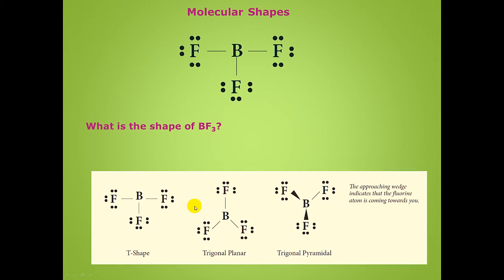Let's take a look at boron trifluoride. There are several possible geometries for this particular species. Is it what we would call a T-shape, a trigonal planar, or a trigonal pyramidal? Let's talk about how we determine molecular shape.